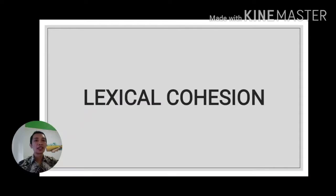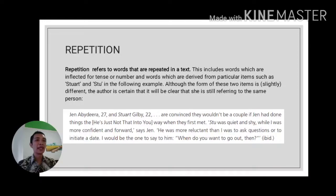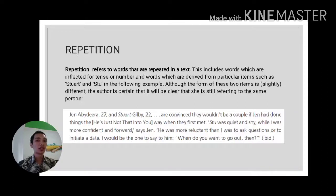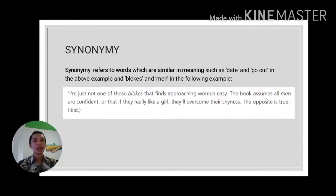The next discussion is about lexical cohesion. The first type is repetition — repeating something in a text. For example: 'Jane Abidera, 27, and Stuart Kilby, 27... Stuart was quiet and shy.' 'Stuart' here is a repetition of the name mentioned earlier. This means the author wants to maintain the message that they are still talking about the same person, Stuart.